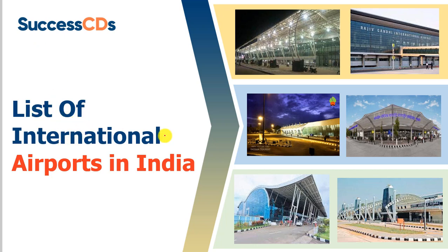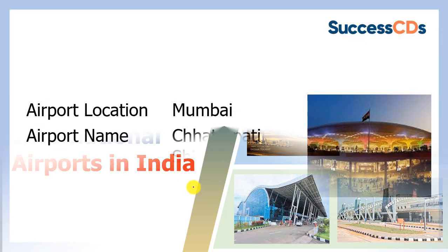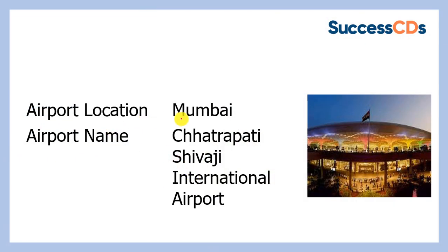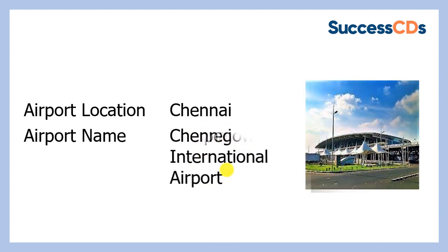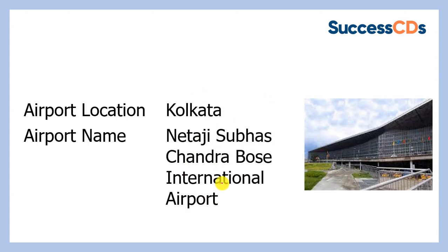Let us check out the list of international airports in India. The first is the airport at Mumbai — Chhatrapati Shivaji International Airport. Then we have the airport at Bengaluru, Kempe Gowda International Airport. The next international airport is at Chennai — Chennai International Airport.